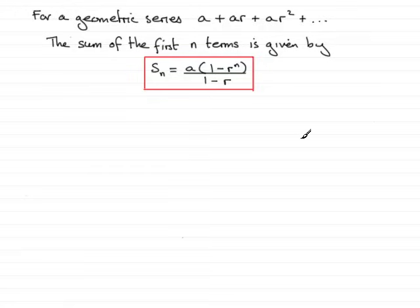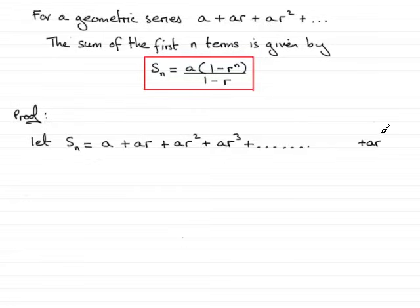So what I want to do is prove this to you. Put proof here, and what I would suggest you do is just say let S_n, the sum of the first n terms, be a for the first term plus the second term which we multiply the first term by r, and that gives us ar, then we multiply the second term by r again and get ar², and it goes on like this, successively multiplying each term by r. And as we get towards the end, the last term, the nth term, will be in fact plus ar to the power n minus 1.